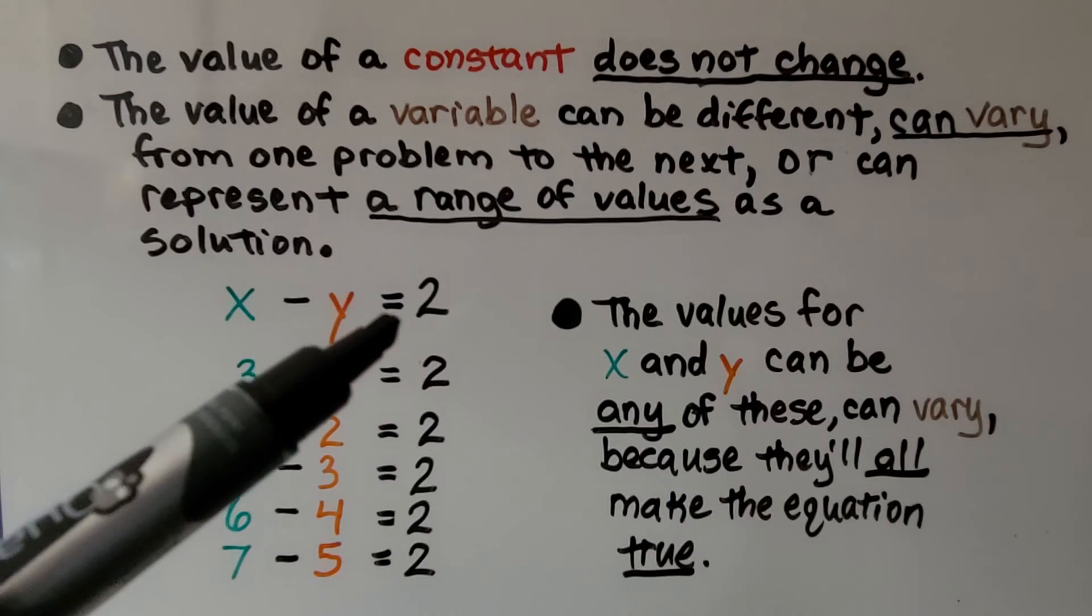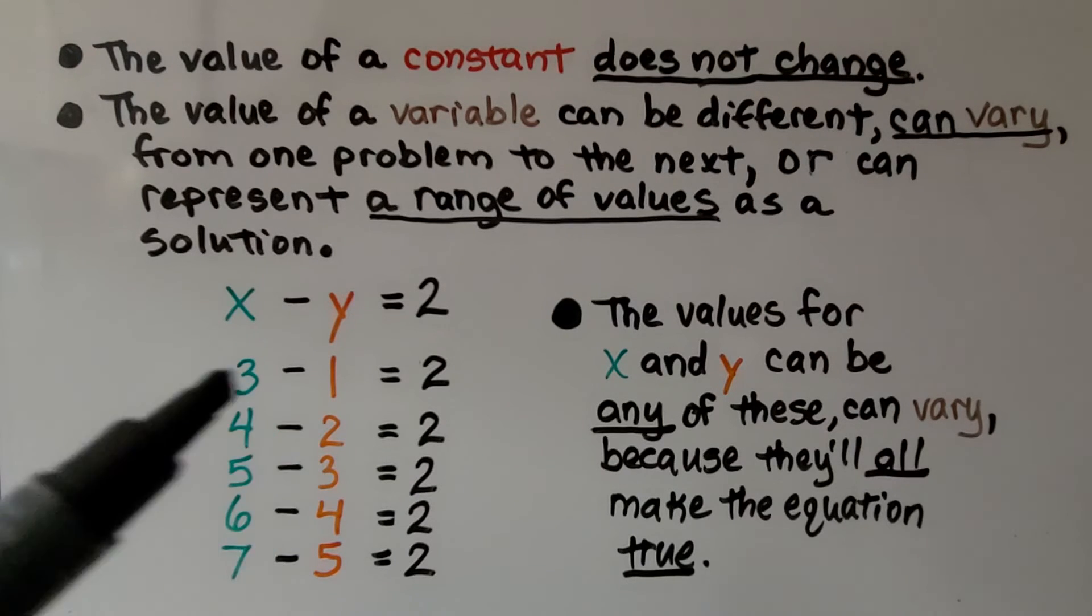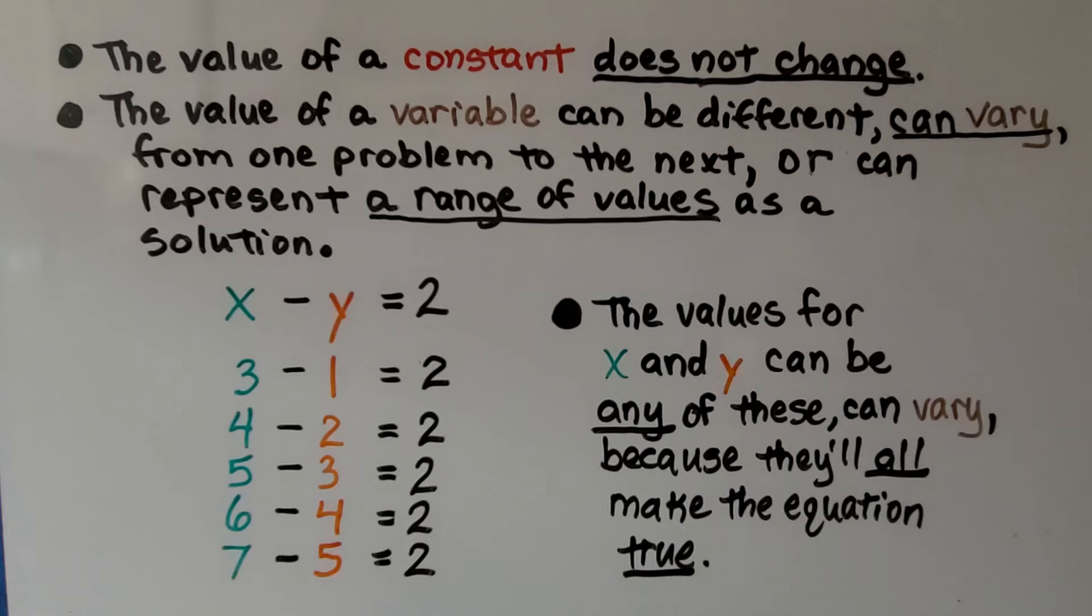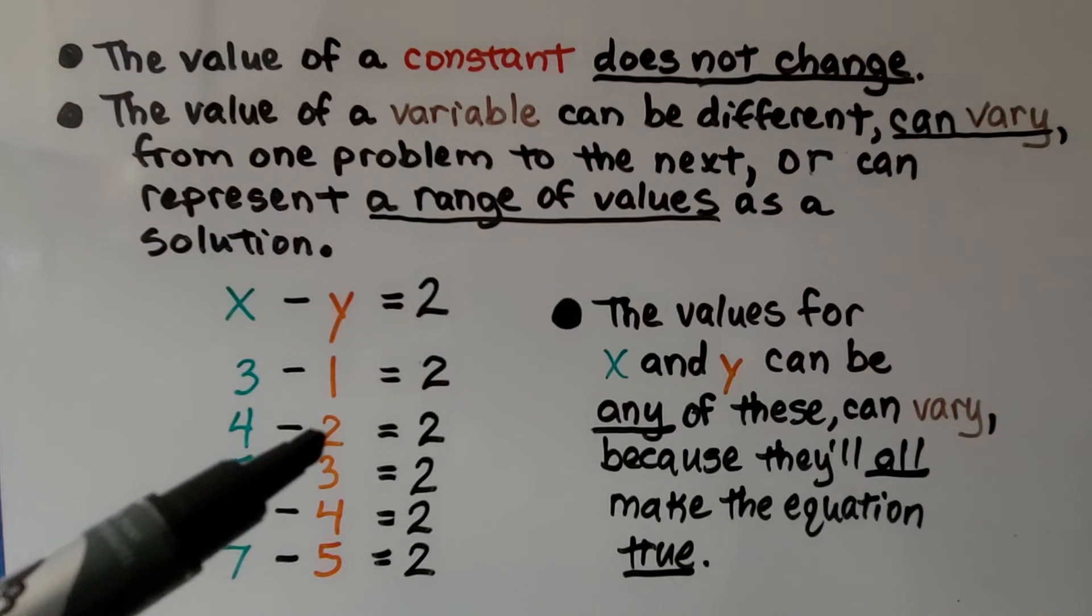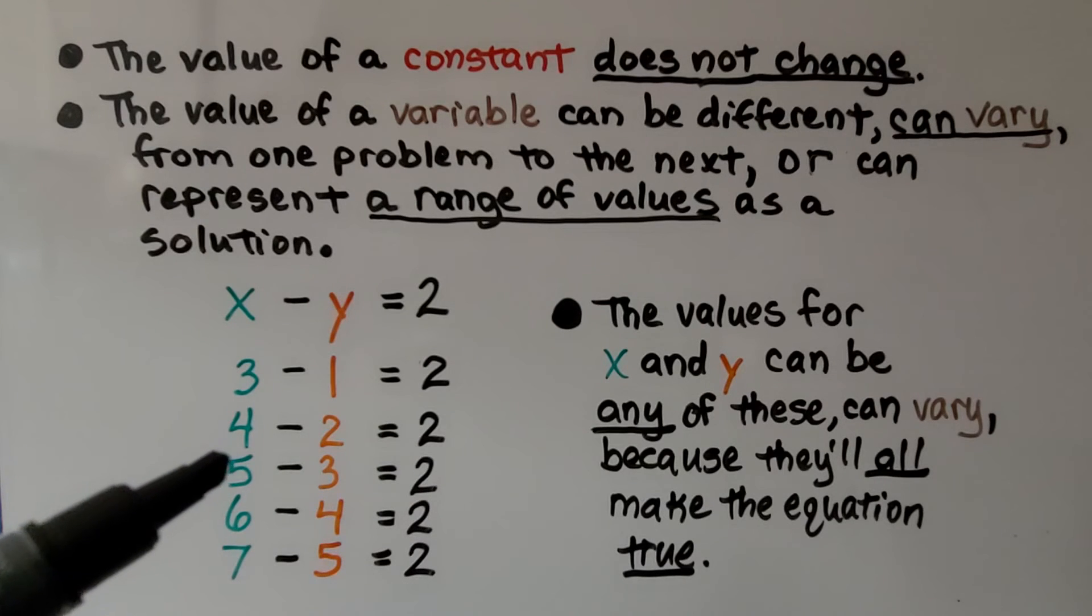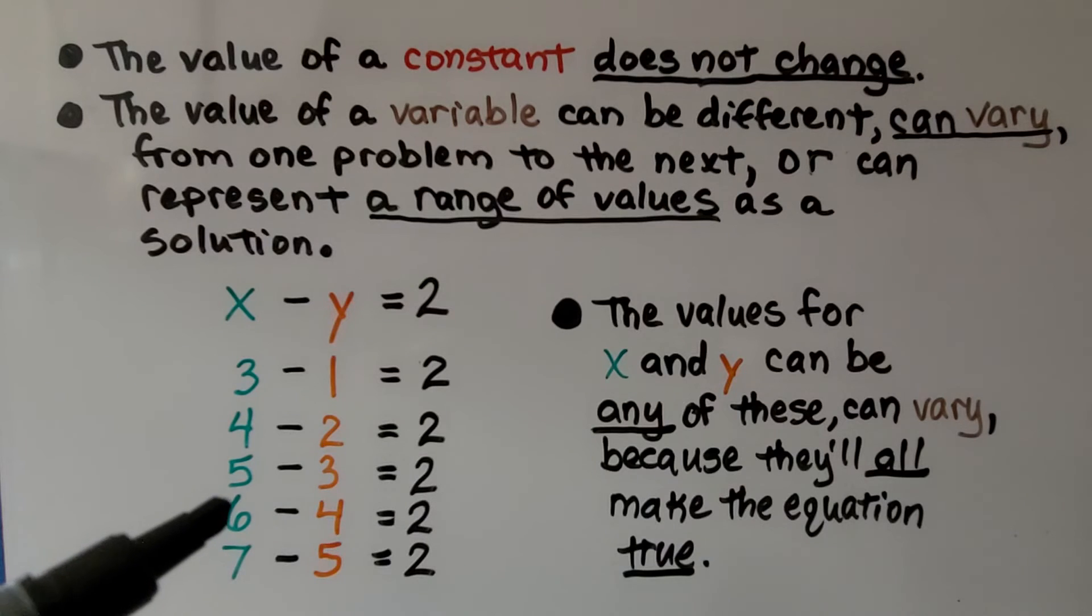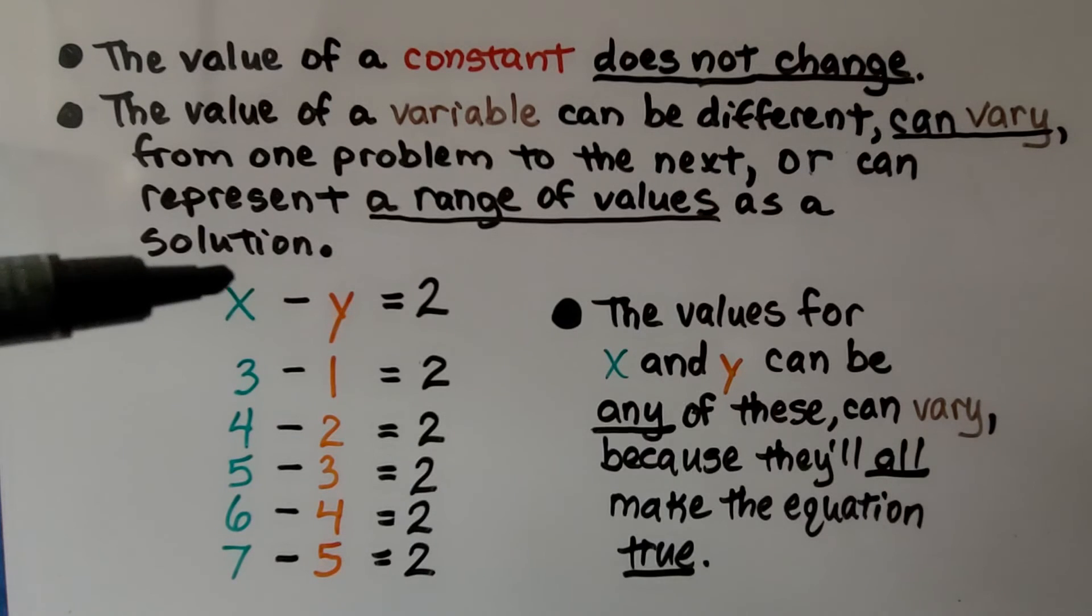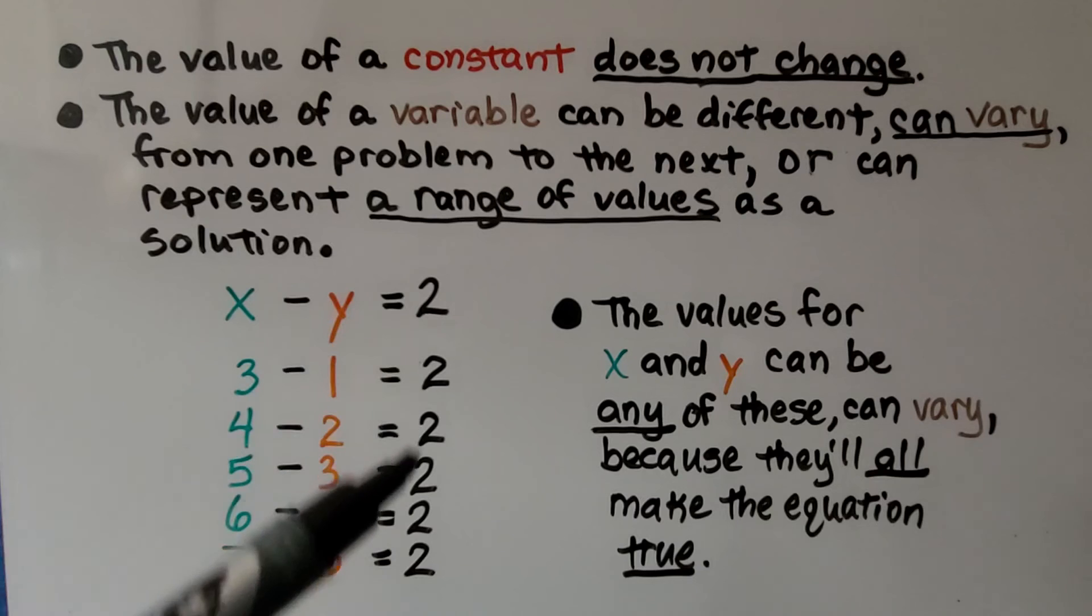If we saw x minus y is equal to 2, well, the values for x and y can be any of these. They can vary because they'll all make the equation true. If x is equal to 3, then y is equal to 1. That'll equal 2. And if x is equal to 4, well, then y would have to be equal to 2. Then it would equal 2. If x was equal to 5, then y would have to be equal to 3 for it to be 2. And if x was 6, y would have to be 4. And if x was 7, y would have to be 5. So its value varies depending on the value of y, and the value of y varies depending on the value of x. But it could be any one of these to equal 2.